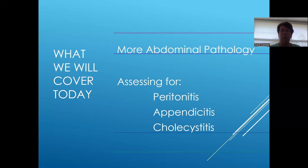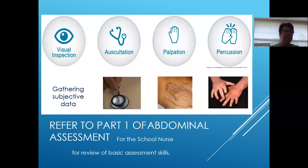Today we will cover more abdominal pathology. We're going to learn how to assess for peritonitis, appendicitis, and cholecystitis. If you have not viewed part one of abdominal assessment for school nurses, I encourage you to review that presentation first. It covers gathering subjective information and discusses inspection, teaches you auscultation, palpation, and percussion skills.